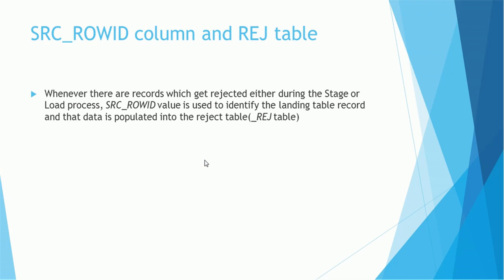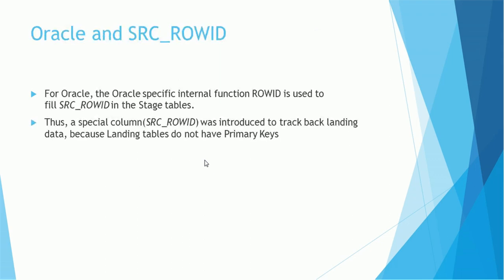The reason is that the stage table has a cleansed version of the record, so we will not get the actual source data if we pull from staging. We have to get the source record from the landing table, and this is determined using the source row ID, which is populated during the stage job or by the ETL. To understand which source record was rejected during the load job and to populate the reject table correctly, the source row ID is used — hence it is important in the reject table.